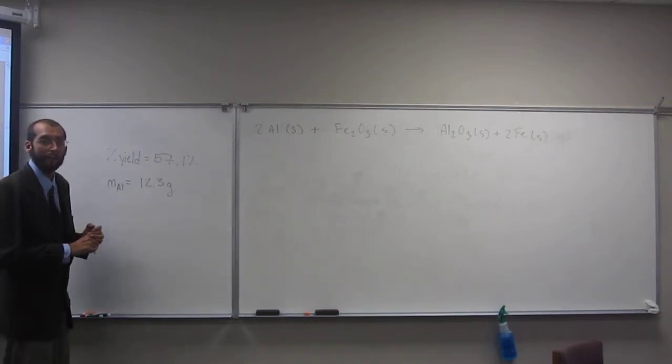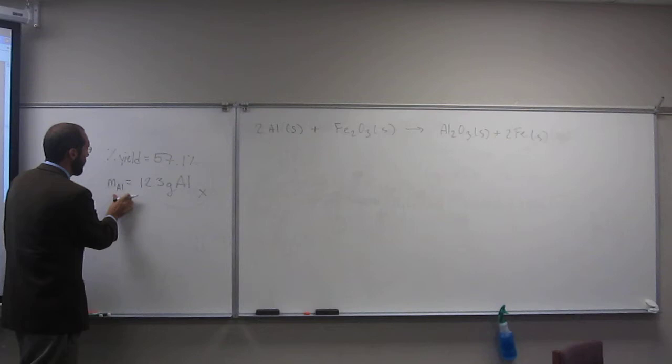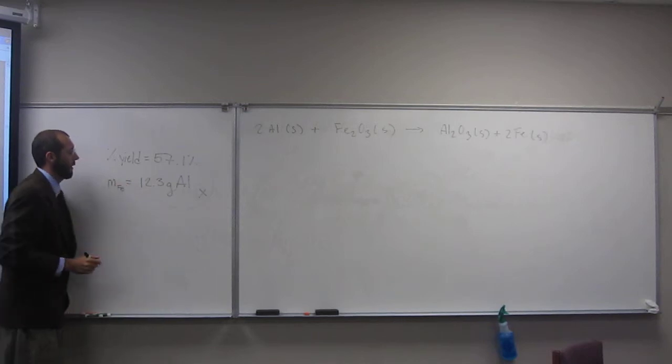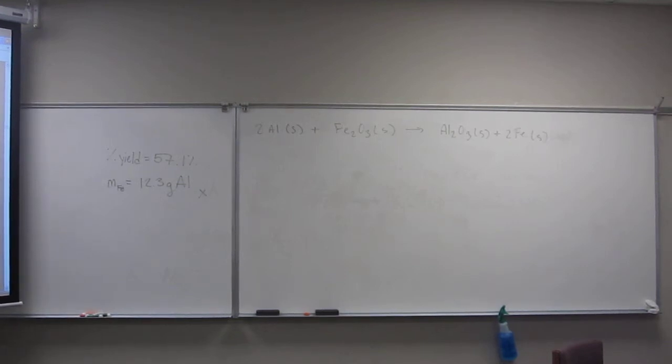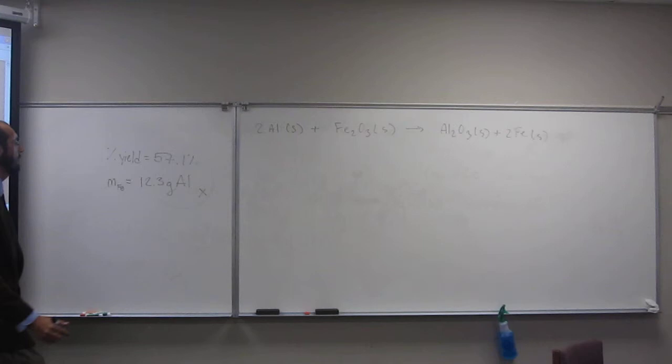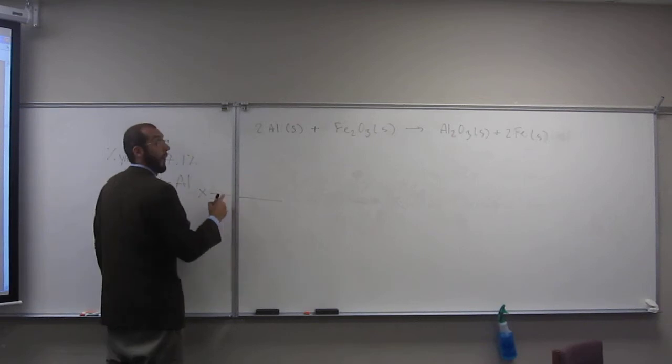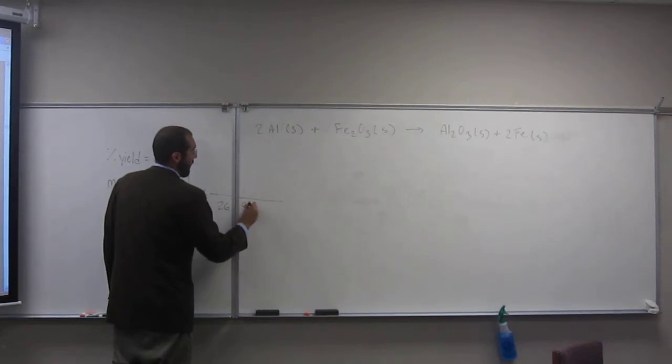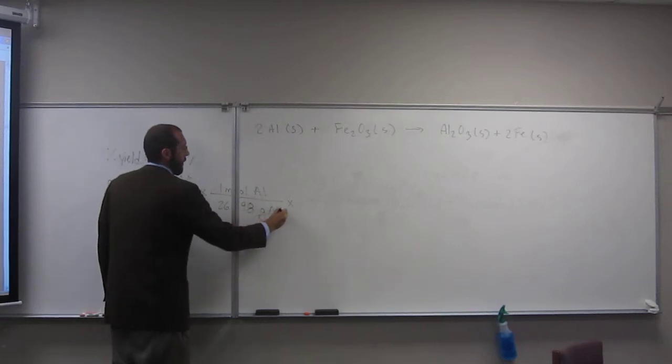You guys can help me along if you would like. Okay, so what do I have to do first? I'm not looking for the mass of aluminum, what am I looking for? Iron. Mass of iron, right? So the first thing we're going to have to do is figure out what the theoretical mass of iron is. And how would we do that? Just like how we normally do it. We're going to convert that to moles, right? So how do I do that? I look up at the periodic table.